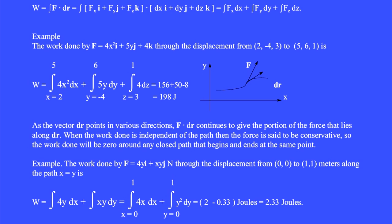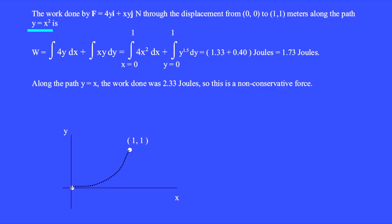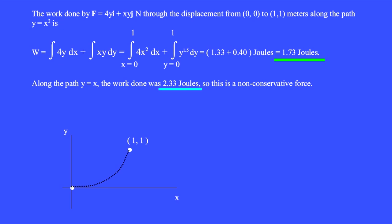Instead of integrating along the path y equals x, let's integrate along the path y equals x squared. If the work done by the force is independent of the path, then the force is conservative. Along the path y equals x squared, the first integrand 4y becomes 4x squared, the second integrand xy becomes y to the 1.5 power, and the integration gives 1.73 joules. Along the previous path y equals x, the work done was 2.33 joules, so this is a non-conservative force.